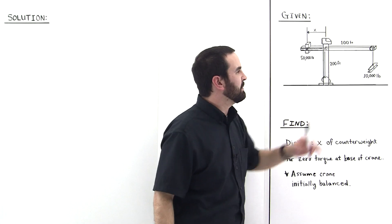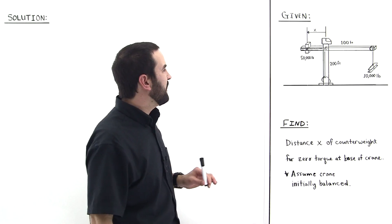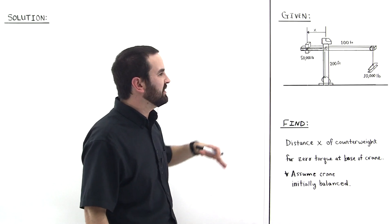So we have this 10,000 pound I-beam hanging off the end of it and we have this 50,000 pound counterweight that will act to balance it.